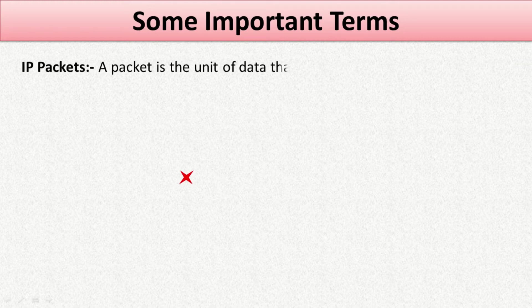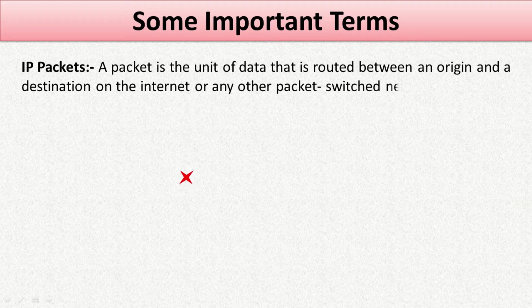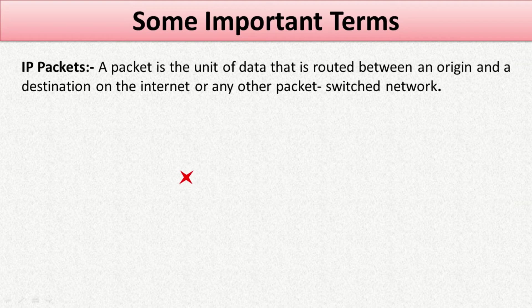IP Packets: A packet is the unit of data that is routed between an origin and destination on the internet or any other packet-switched network. Suppose I want to send data or information from one computer to another — the data will not transmit in the same size and format. The data or information is first divided into small pieces called packets, and these packets are routed to the destination computer. These packets contain a header, and the header contains addresses and the serial sequence in which packets are reassembled at the destination computer.